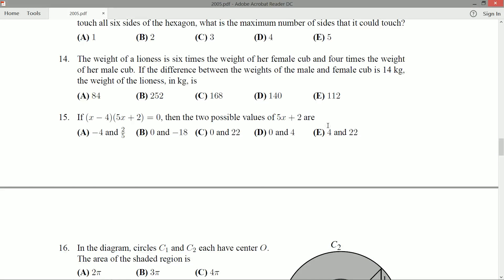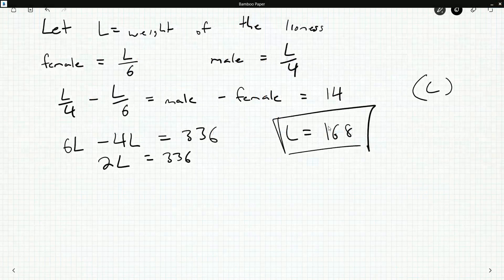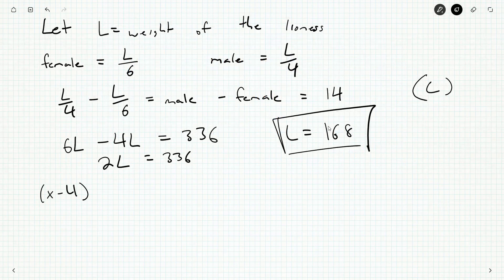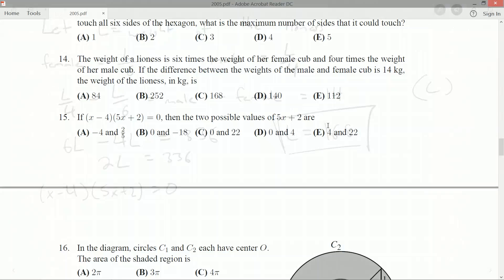Alright, so I'm going to copy down this equation here: (x-4)(5x+2) = 0. Now you could very quickly read off your different values of x from here. x is 4, x is negative 2/5. Those would be fine things to do. And then you could plug them into the 5x+2 and get the two possible values.